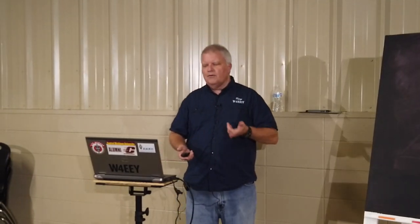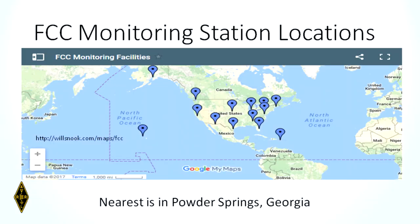Here are the FCC monitoring stations in the United States. The nearest one to us is in Powder Springs, Georgia. So if you happen to be driving through there and get within one mile of the FCC monitoring station, you may have to cease transmission.